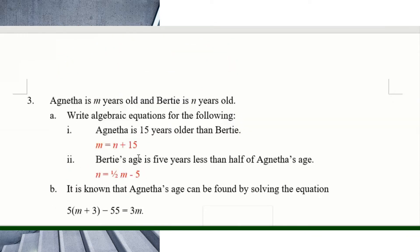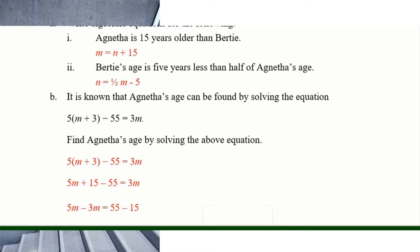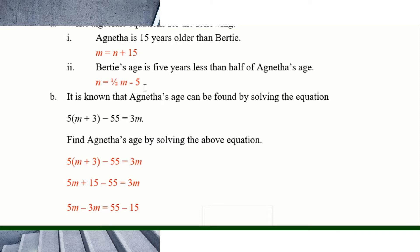Number three is quite manageable. Agneta is m years old and Bertie is n. Write the algebraic equation: Agneta is 15 years older than Bertie, so m equals n plus 15, because Bertie is n. Bertie's age equals half of Agneta's age minus five, so n equals (m divided by 2) minus 5.